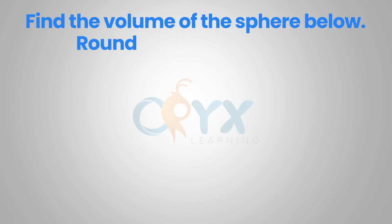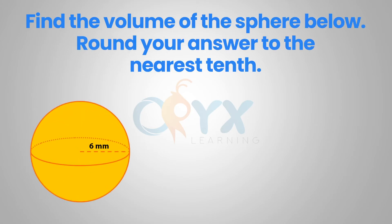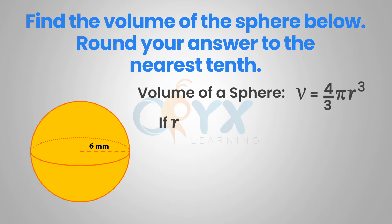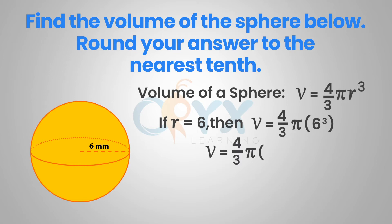Find the volume of the sphere below. Round your answer to the nearest tenth. The volume of a sphere is v equals four-thirds pi r cubed. In the diagram, we can see that the radius is 6. Substituting 6 in for r gives v equals four-thirds pi times 6 to the third. Simplifying, we get v equals four-thirds pi times 216, or v equals 288 pi. Multiplying 288 by pi and rounding to the nearest tenth, the volume is approximately 904.8 millimeters cubed.